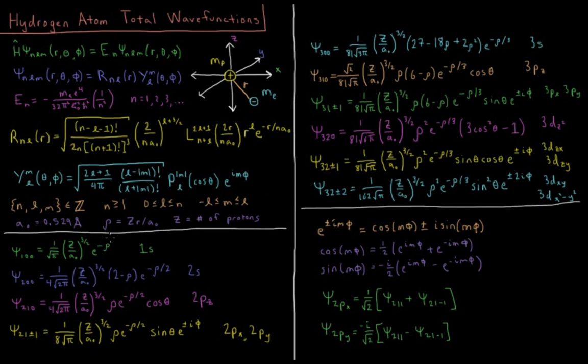These wave functions work for any hydrogen-like atom. And a hydrogen-like atom is anything with one nucleus and one electron. So we could use hydrogen, He⁺, lithium²⁺, beryllium³⁺, etc. Anything with one nucleus and one electron. So let's actually look at some of these wave functions now.